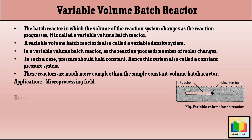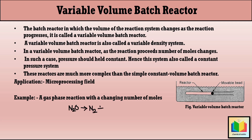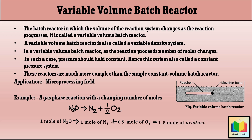Now let's take the example of a gas phase reaction with a changing number of moles. The reaction is: N2O gives 1 mole of N2 plus 0.5 mole of O2. This decomposition reaction is carried out at constant pressure. From this reaction, 1 mole of N2O gives 1 mole of N2 and 0.5 mole of O2, so 1 mole of N2O gives 1.5 moles of products. Hence the number of moles changes, and at a given temperature and constant pressure, the volume will increase — there is variation in the volume of the reaction system during the course of the reaction.